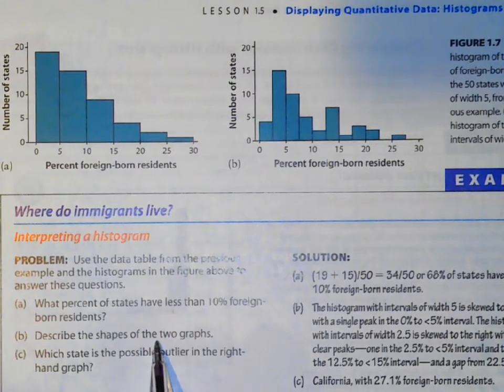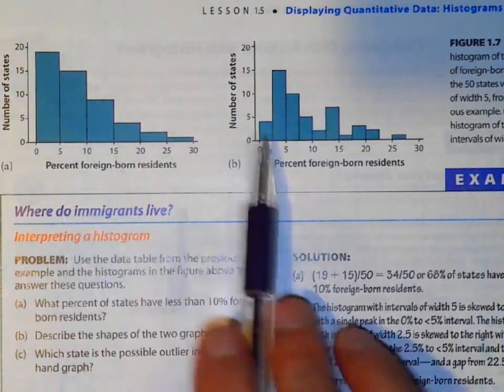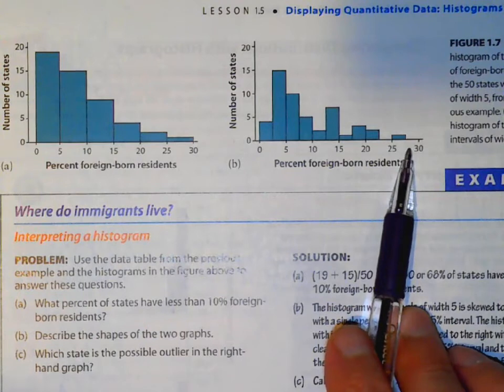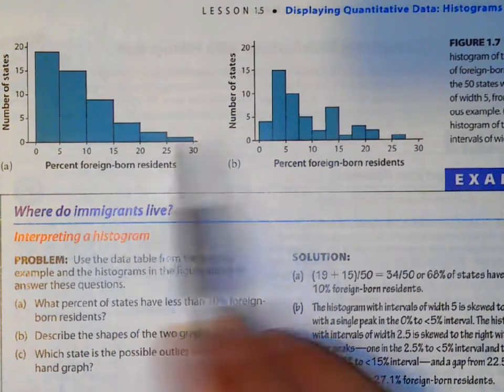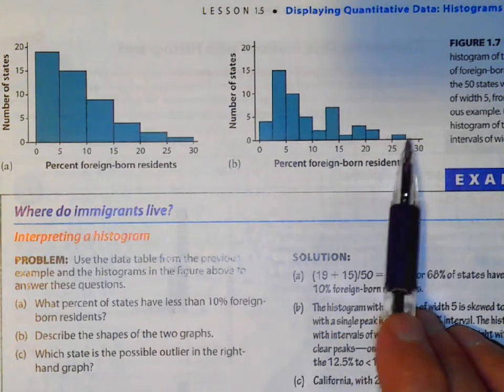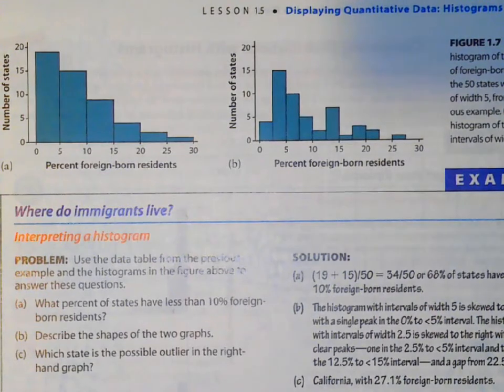If we describe the shape of them both, I'd say they're both skewed to the right. Which state has a possible outlier? We don't think I see any outliers here, but California could be an outlier here.